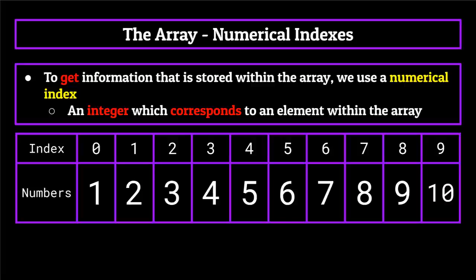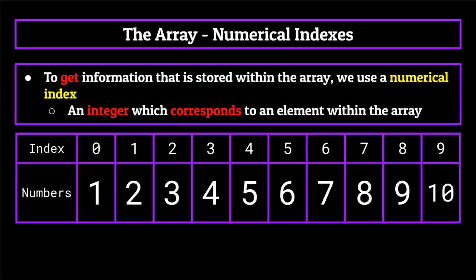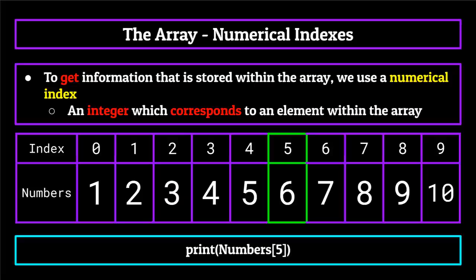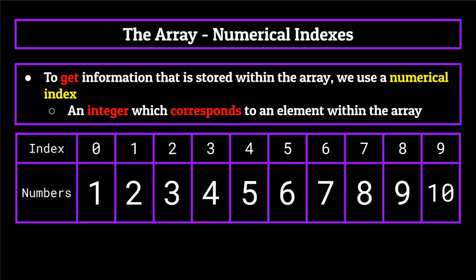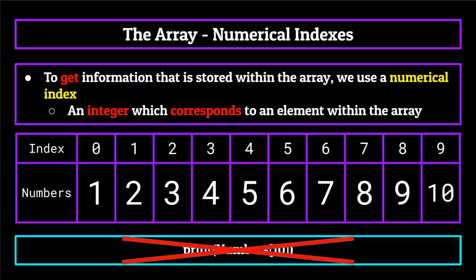To retrieve information from a certain position within the array, you would reference it using both the array's name and then the index number of the element you wish to retrieve. Say we have our array called numbers which contains the integers one through 10. To print out the element at the fifth index — in this case the number six — we would reference the array name, in this case numbers, and then in a set of brackets place the index we want to retrieve, in this case the number five. This is basically telling the computer to print out the fifth index of the numbers array, which is the integer six. Because indexes start at zero instead of one, to get the 10th element of the array, you would actually need to reference it using the number nine. If you make this mistake, it will result in an array out of bounds error.